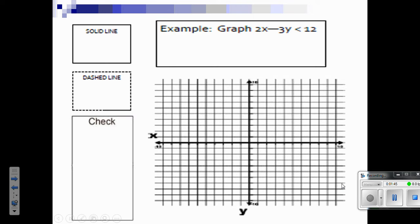If you have a solid line, you'll have a less than or equal to, or a greater than or equal to sign. A dashed line would be a less than or a greater than sign. And then this check area is where we're going to decide where we shade. Before we can do that, we're going to have to graph our line.